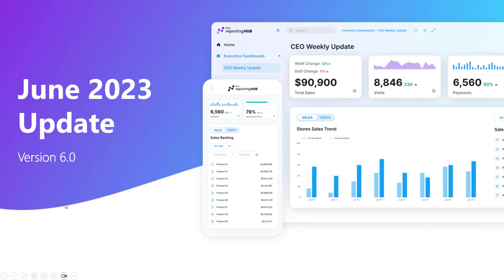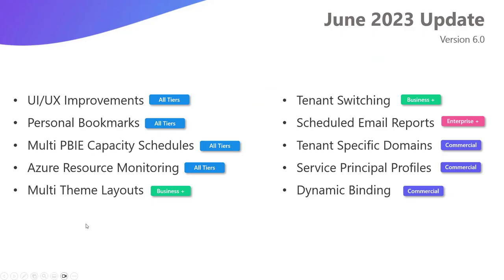Hello and welcome to our latest release from the Reporting Hub — our June 2023 update, version 6. My name is Brian and I'll be walking through the update today. We'll be going through all the latest and greatest new features one by one. You can see on the screen we're showing you all the new features included in this release along with their corresponding subscription tier. Let's get started.